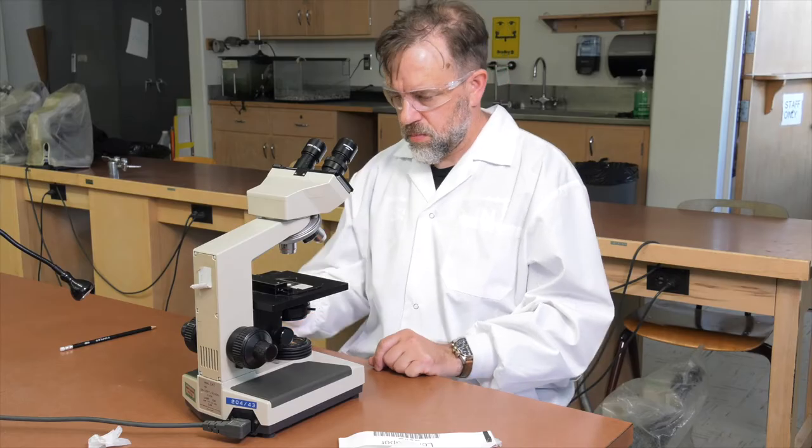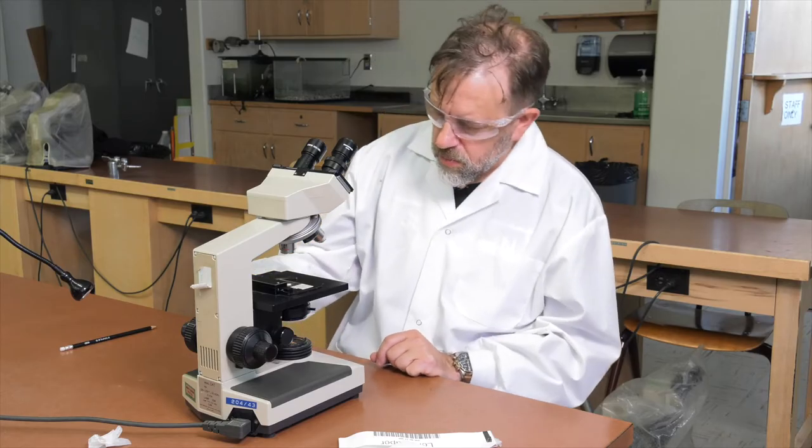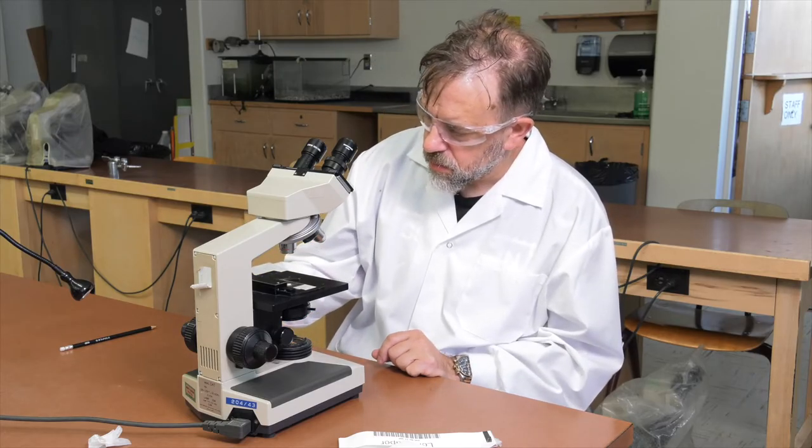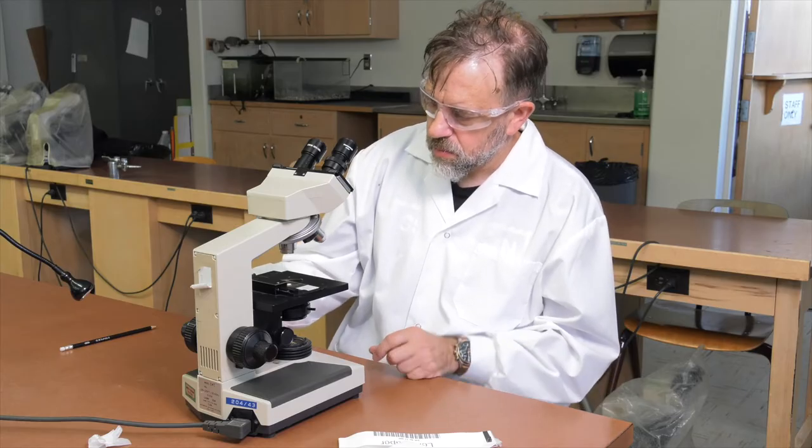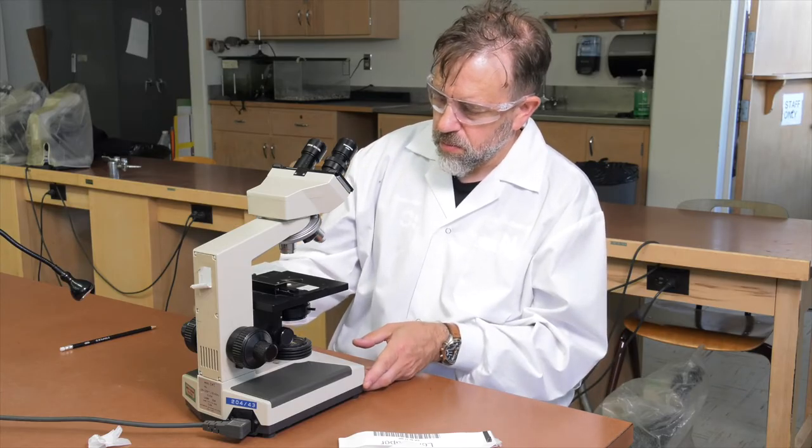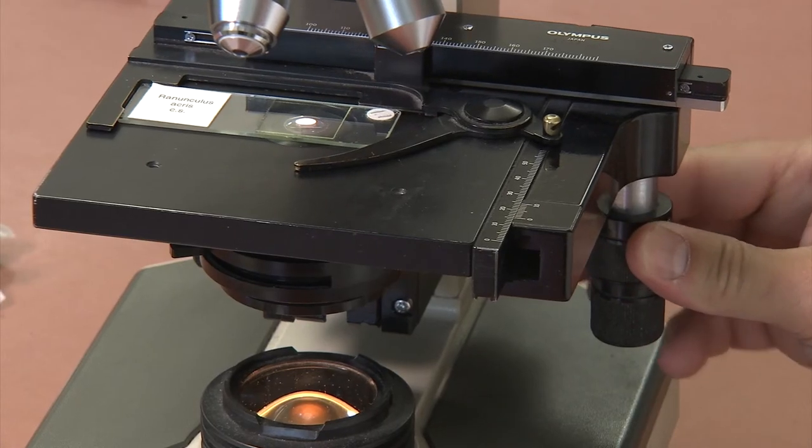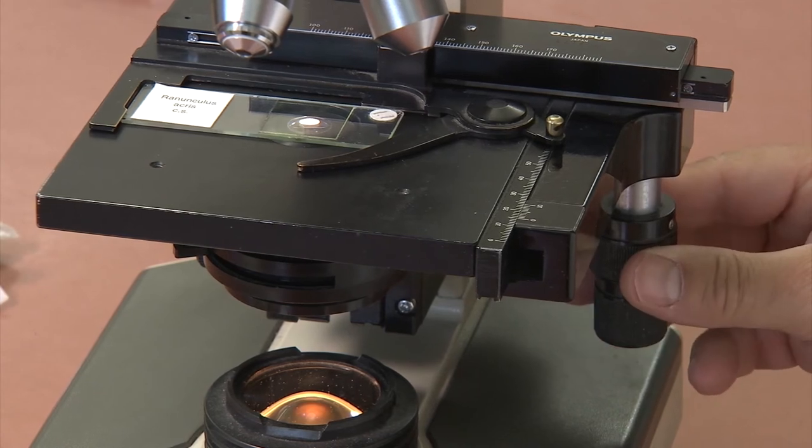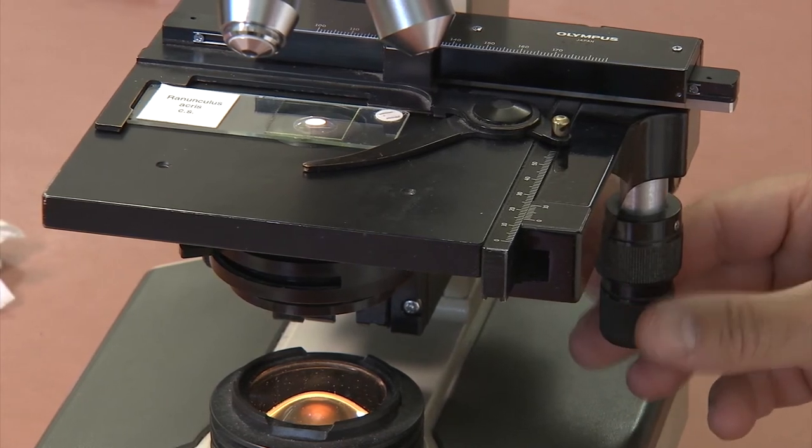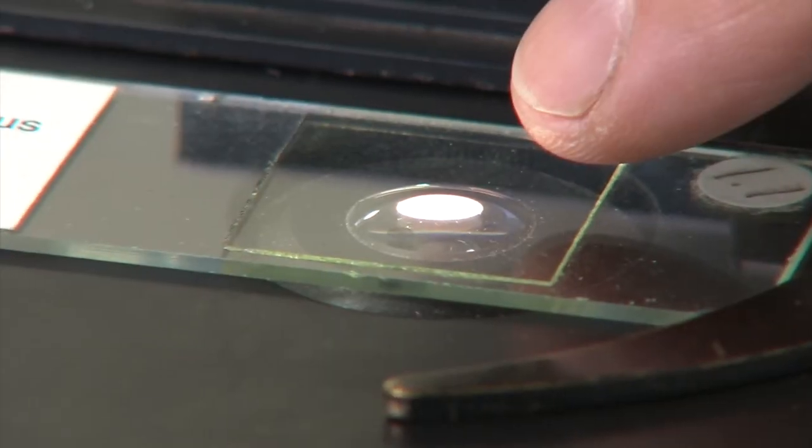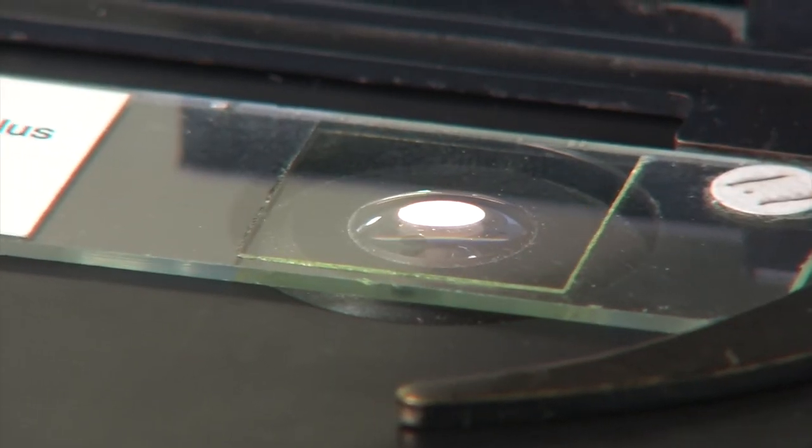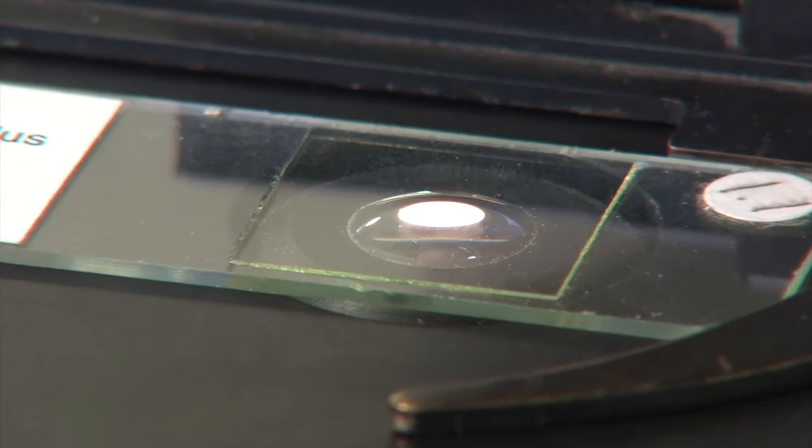While looking at the slide from the side of the microscope, not through the oculars, use the mechanical stage controls to position your specimen over the hole in the stage. The bottom part of the control moves the slide from side to side, while the top part moves it back and forth on the stage. You should see your specimen become illuminated by the light from below.